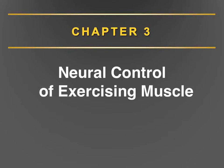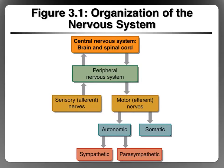Chapter three is neural control of exercising muscle. The first thing it's important to review and make sure you have a clear understanding of before we move on in this chapter is the basic organization of the nervous system. The nervous system has two parts: the central nervous system and the peripheral nervous system. We often refer to the central nervous system as CNS, and it consists of the brain and the spinal cord.